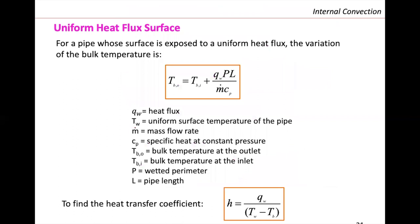Another common case in internal convection is the uniform heat flux surface. Besides the isothermal surface, we can have a uniform heat flux surface. This applies when a pipe surface is exposed to a uniform heat flux and we want to know the variation of the bulk temperature, especially T-bulk-out. When our surface is exposed to uniform heat flux, we use an equation where Q_W is the heat flux the wall experiences.